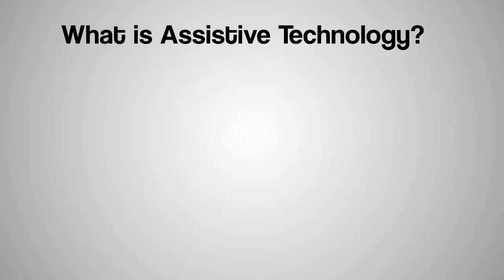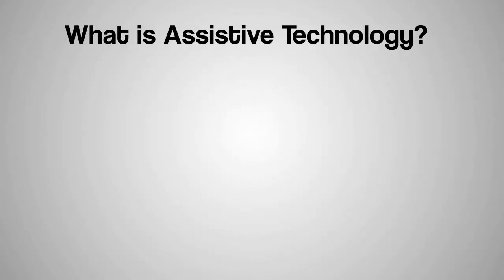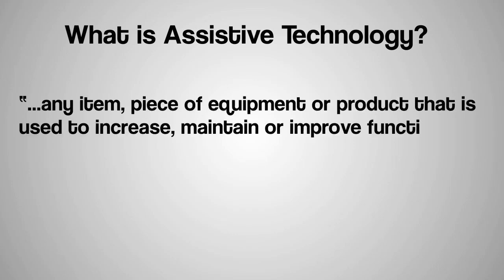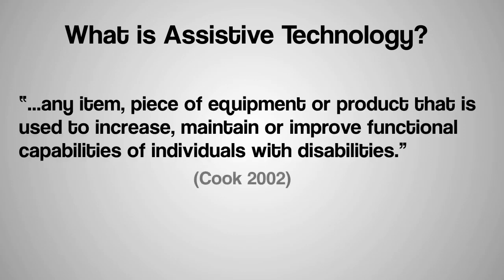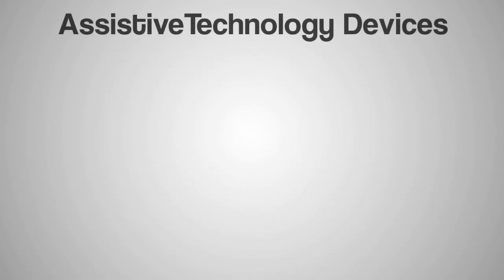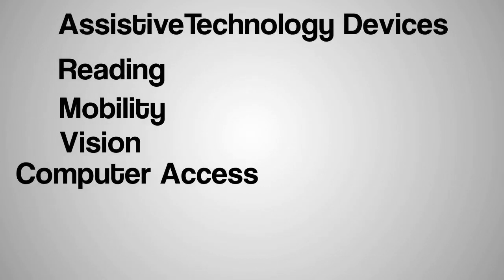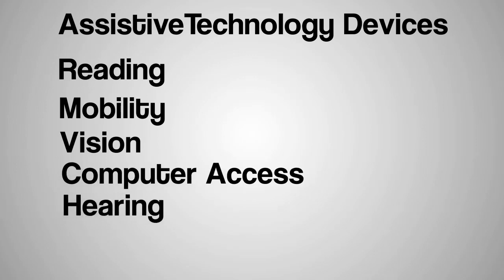What is assistive technology? An assistive technology device is any item, piece of equipment, or product that is used to increase, maintain, or improve the functional capabilities of individuals with disabilities. Some examples of assistive technology devices include reading, mobility, vision, computer access, hearing, and written communication aids.